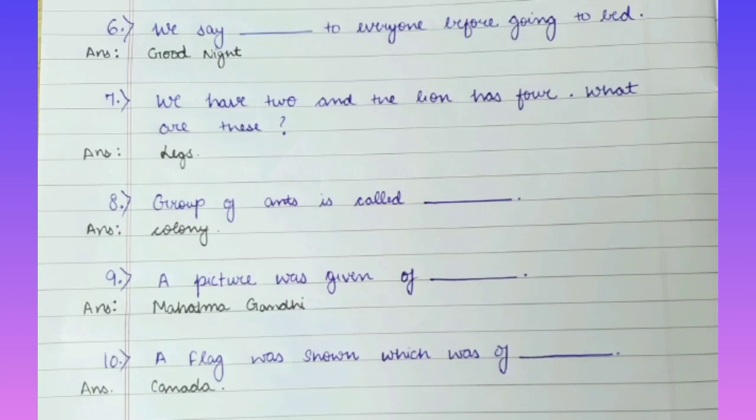Question No. 7: We have 2 and the lion has 4. What are these? Answer is Legs. Question No. 8: A group of ants is called Dash. Answer is Colony.